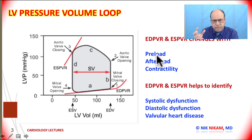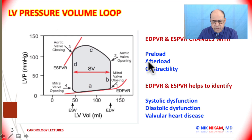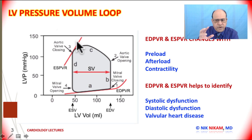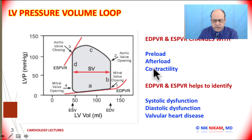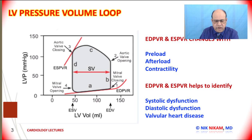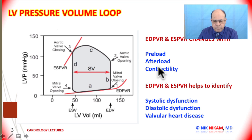These relationships change with preload — the amount of blood coming into the ventricle during diastole. They also depend on afterload — the resistance against which the left ventricle has to contract — and finally the contractility of the left ventricle itself, the muscular function of the heart.